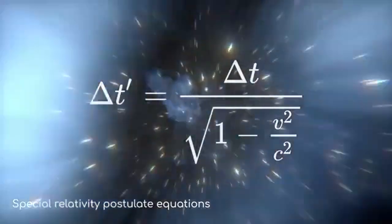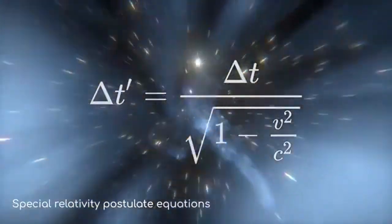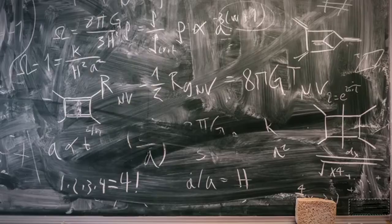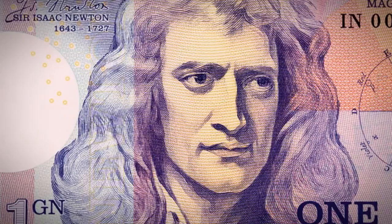Einstein's general theory of relativity went further, linking gravity not to a force but to the curvature of space-time caused by mass. This theory predicted phenomena like black holes and gravitational waves, later confirmed by observations. Despite challenges and alternative theories, Einstein's concepts remain the cornerstone of modern physics, shaping how we perceive the universe's fabric and the passage of time.